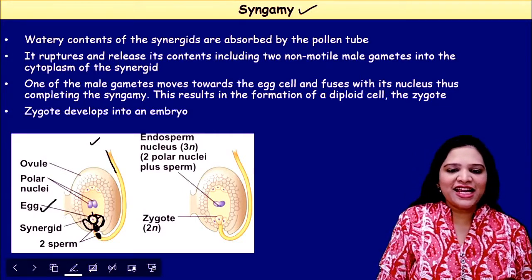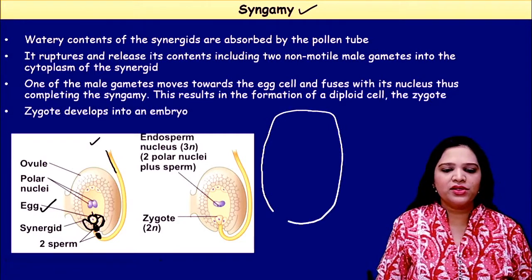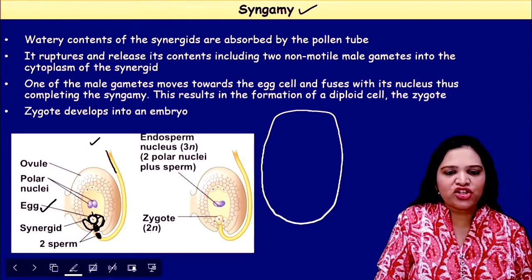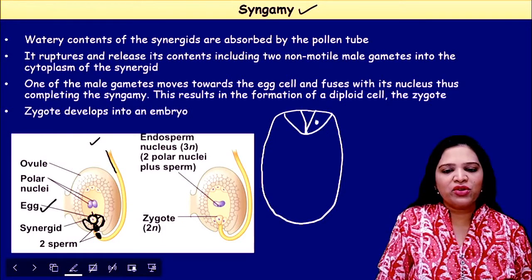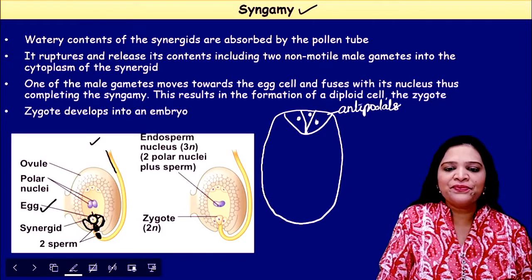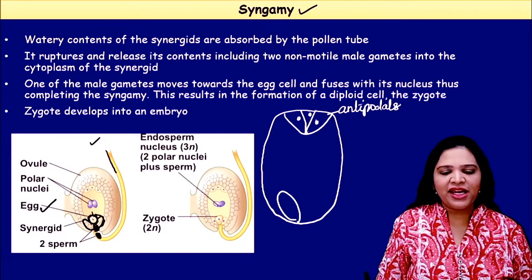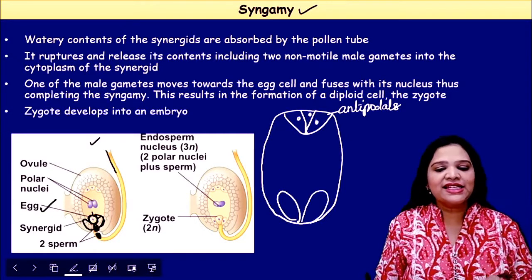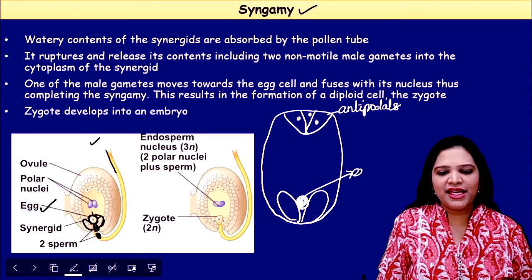Let us understand this with our own diagram. I am drawing a mature embryo sac. At the chalazal end the mature embryo sac has three cells — the antipodal cells. At the opposite micropylar end there are two big cells called the synergid cells, and behind them is the egg cell.